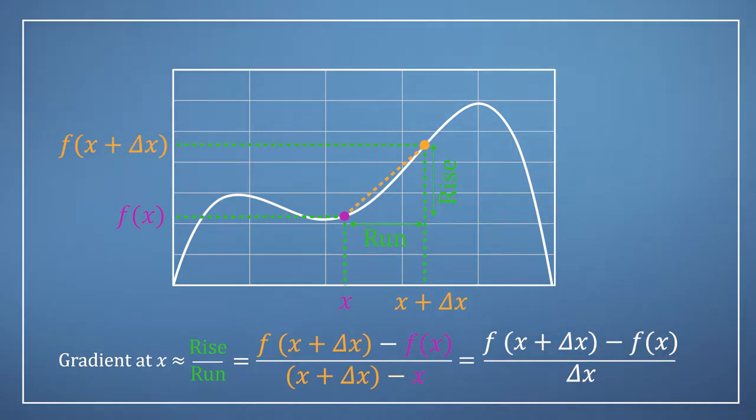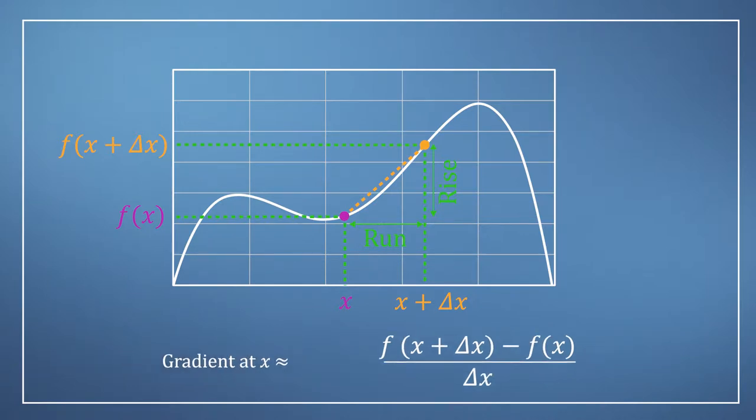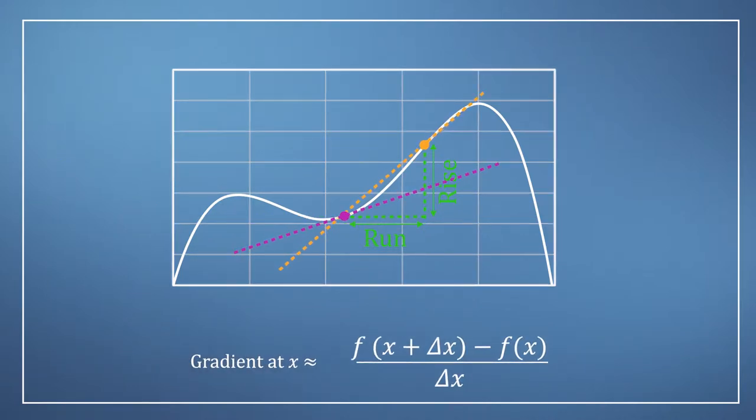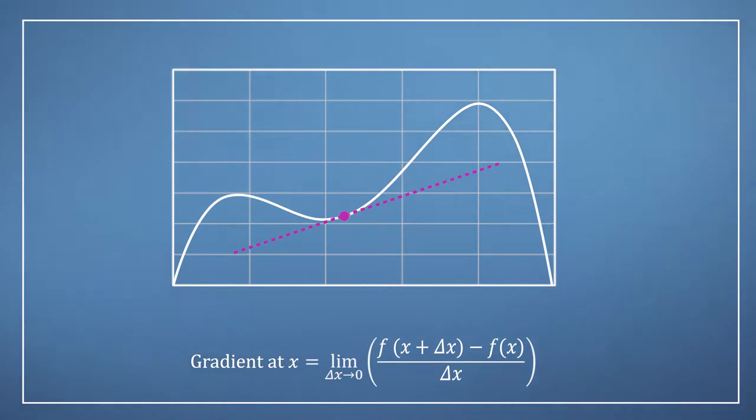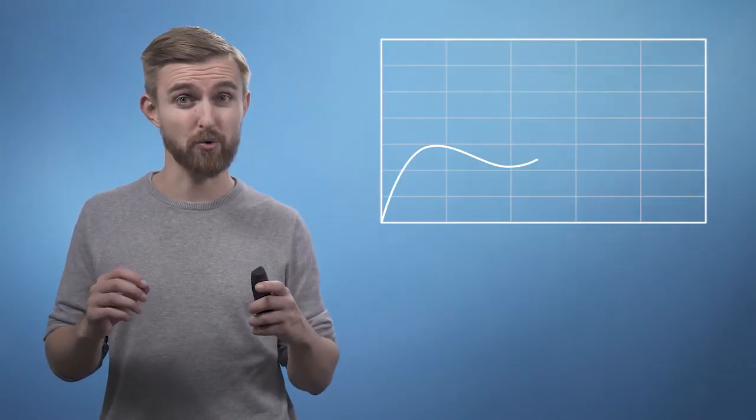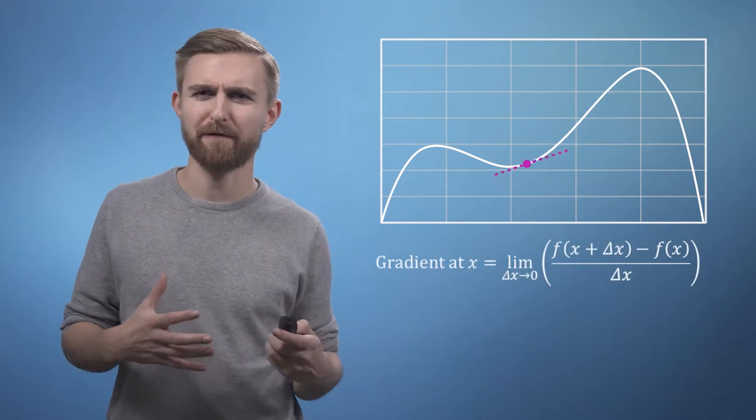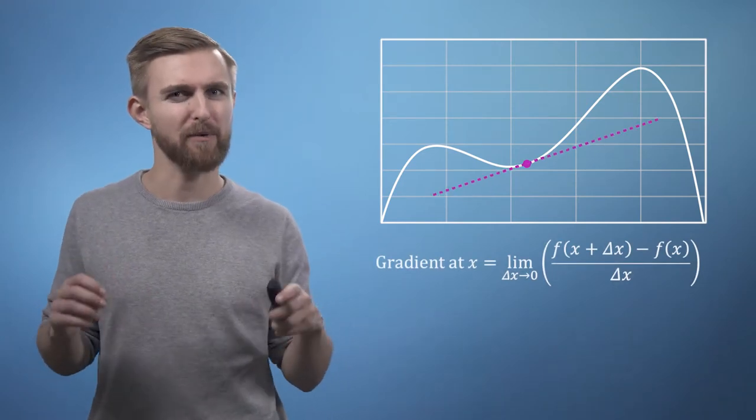The last step in this process is simply to notice that for nice smooth continuous functions like the one we're showing here, as delta x gets smaller, the line connecting two points becomes a better and better approximation of the actual gradient at our point x. We can express this concept formally by using the limit notation scheme, which says that as delta x goes to zero, our expression will give us a function for our gradient at any point we choose.